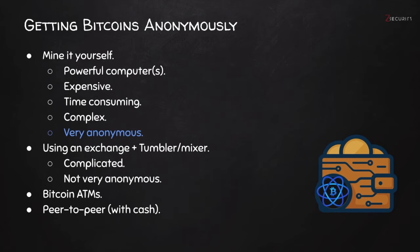The next option is to use an exchange. Using exchanges is not anonymous because they will ask for your bank information and they will ask you to verify your identity. However, we can combine using an exchange with what's known as Bitcoin tumblers or mixers. These are services that attempt to mask where the money is coming from. There is a lot of debate about how good or how anonymous this is, and it adds an extra step when transferring the money. Because of all of this, I wouldn't feel very secure or anonymous using this method.